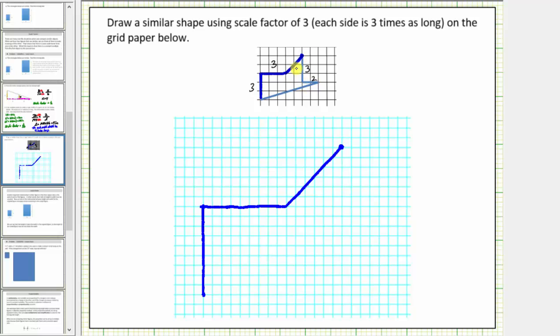The next side goes down three units. Because the scale factor is three, we'll go down three times three or nine units from this point here. So down three, six, nine units. This side corresponds to this side.